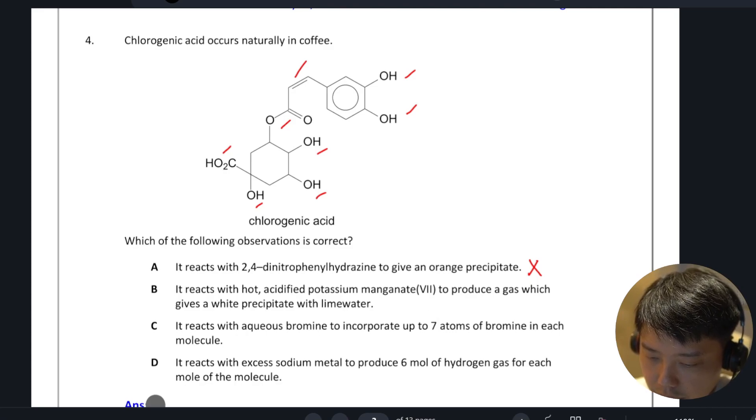It reacts with acidified KMnO4 to produce a gas. This is correct because there is an oxidative cleavage here, there is an acid hydrolysis here. This part here will cleave off to become carbon dioxide, which is the gas that will produce a white precipitate with lime water. So B is our correct answer.